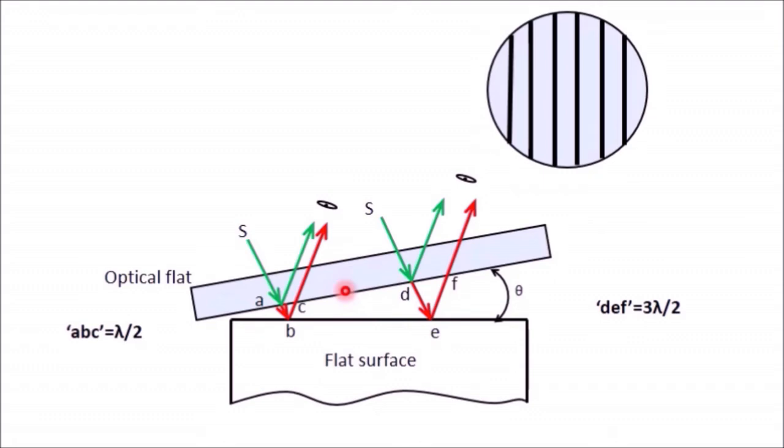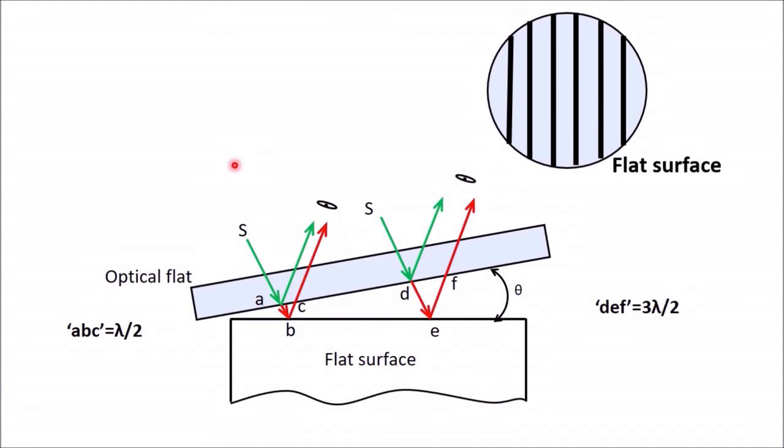If the surface is perfectly flat, fringe patterns will be regular, parallel, and uniformly spaced. In that case, you will get fringes which are regular, parallel to each other and uniformly spaced.